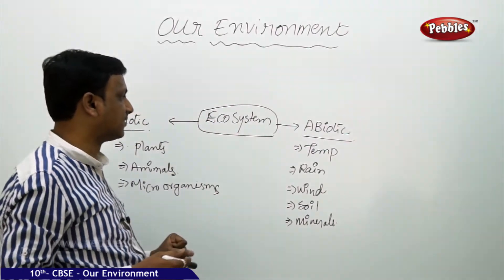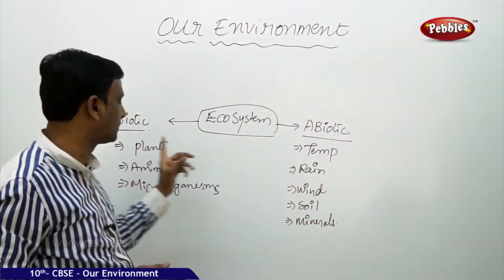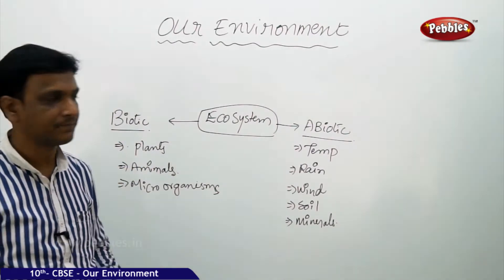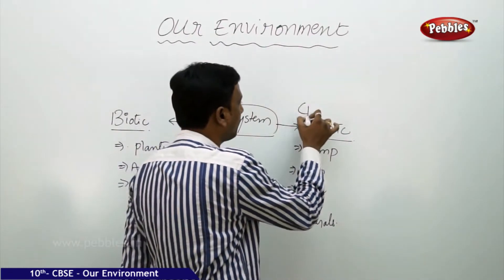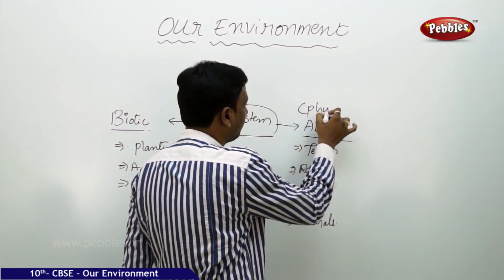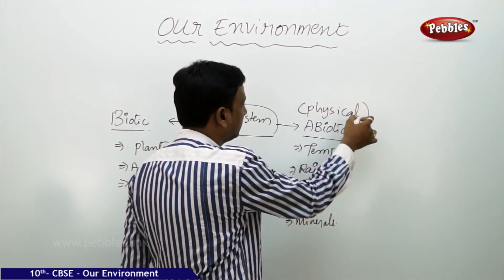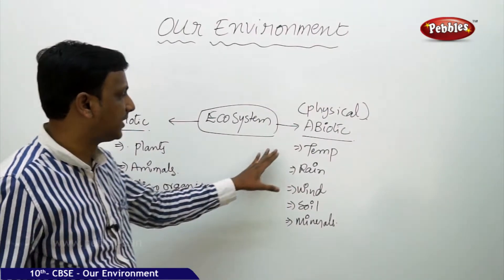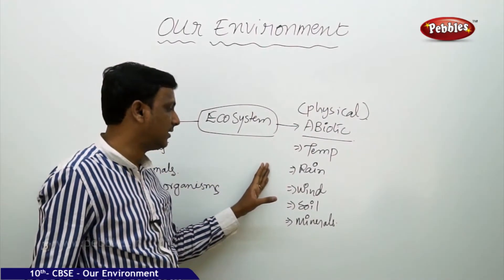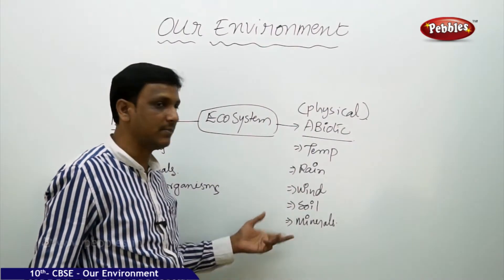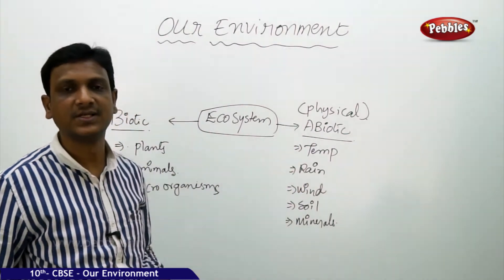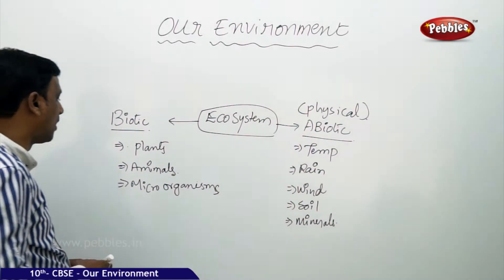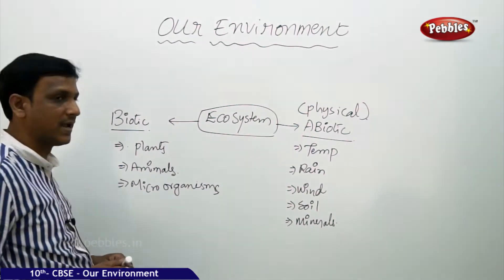In any ecosystem, you find two things: biotic components and abiotic components. We can also call abiotic components physical components. These physical or abiotic components include temperature, rainfall, wind, humidity, soil, and minerals. The biotic components include plants, animals, and microorganisms.